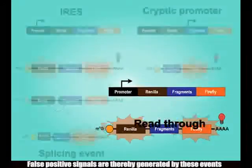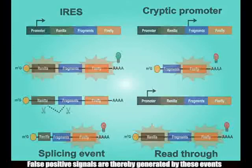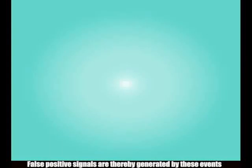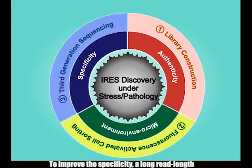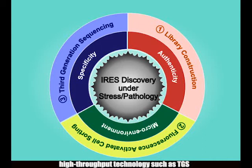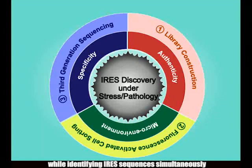False positive signals are thereby generated by these events. To improve specificity, a long-length, high-throughput technology such as TGS could be employed to detect abnormal transcripts while identifying IRES sequences simultaneously.